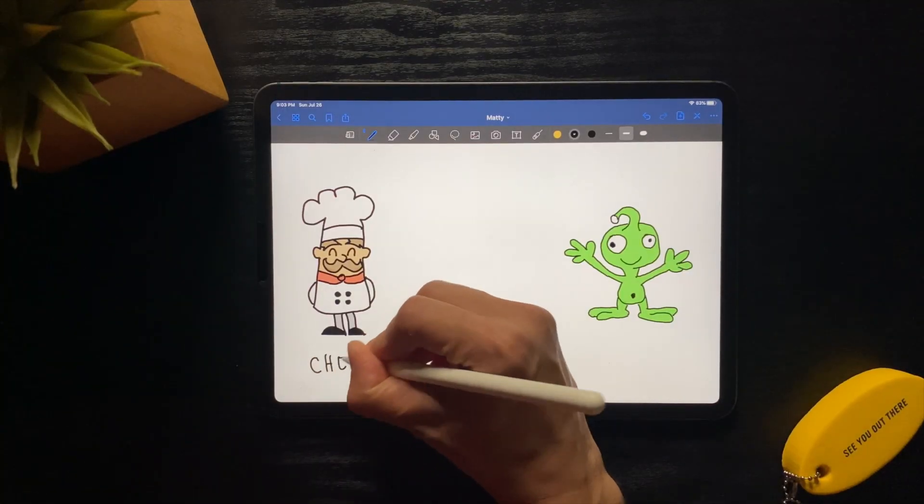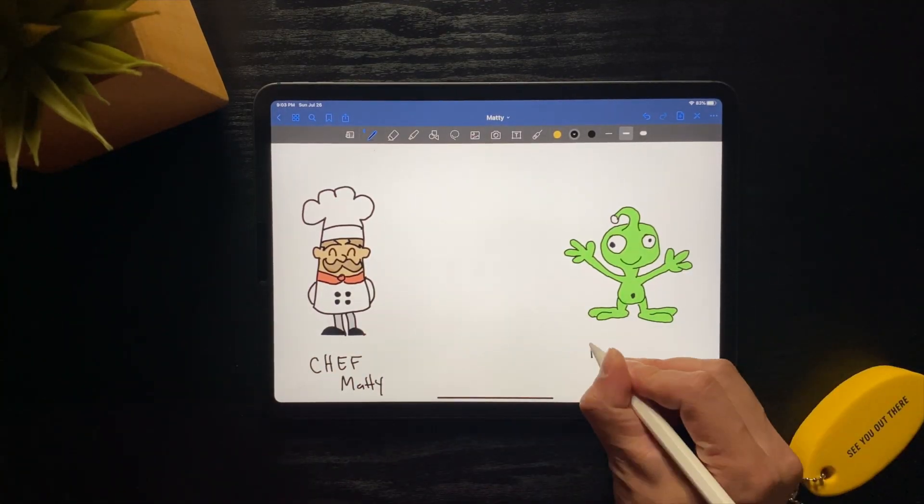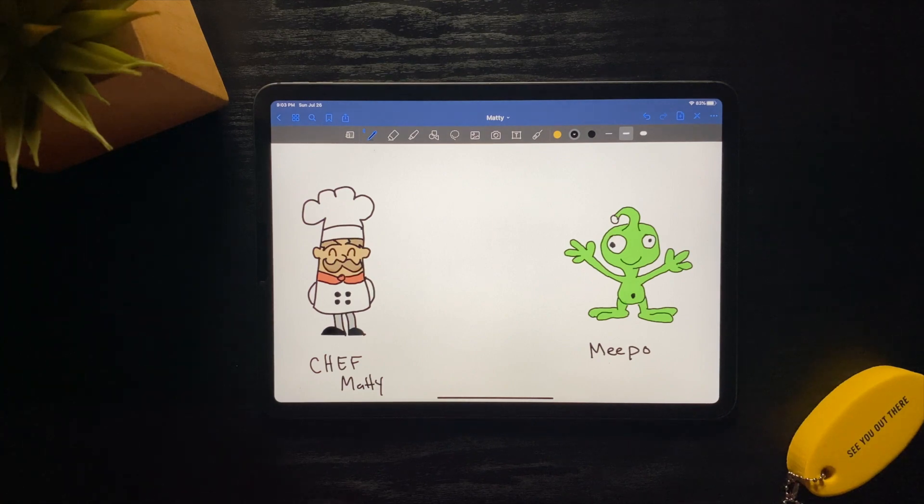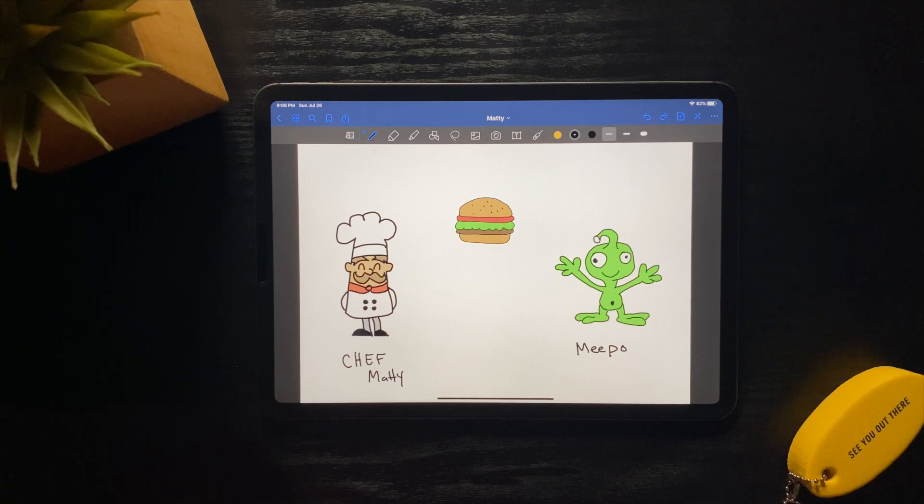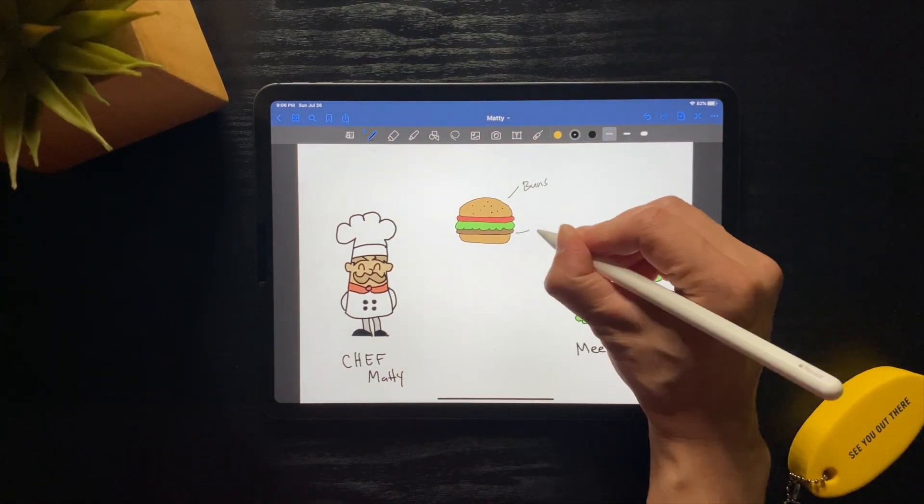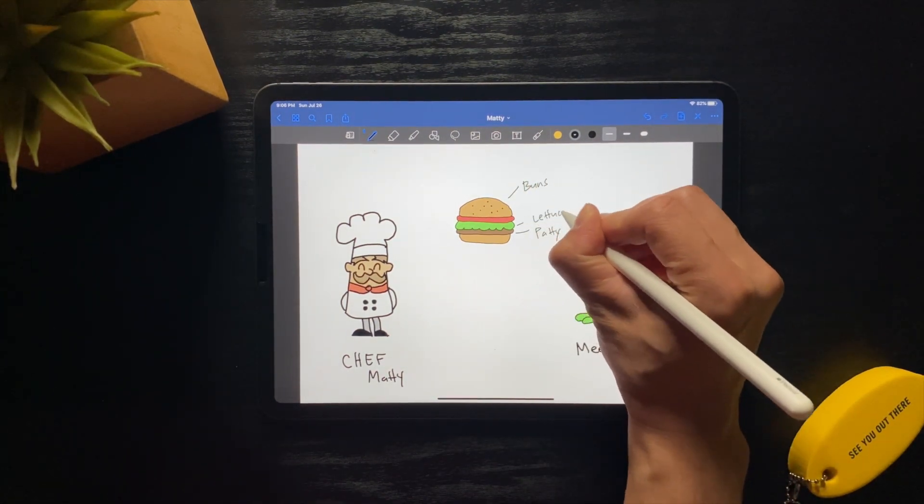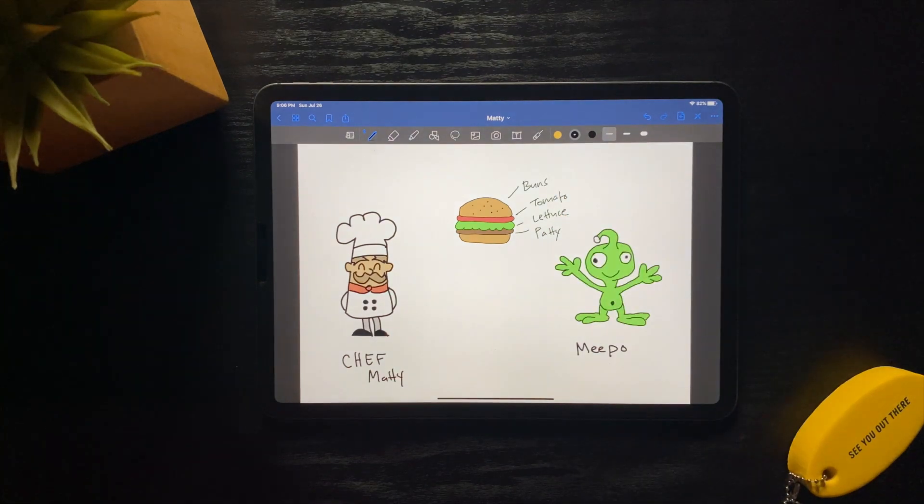Imagine that you're a chef, and you're speaking to an alien, Meepo, and you want to explain how to make a hamburger. Well, you'd probably start off by listing the main ingredients of a hamburger, like the buns, patty, lettuce, and tomato.